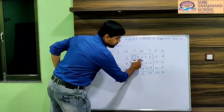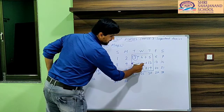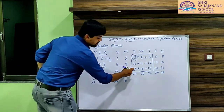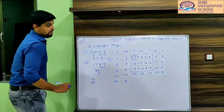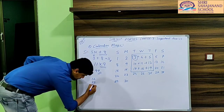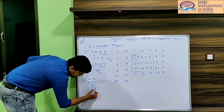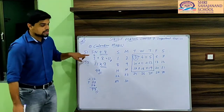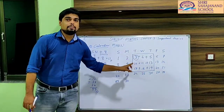Let's verify by adding: 3 plus 4 is 7, plus 5 is 12. First row: 12. Then 10 plus 11 is 21, plus 12 is 33. Second row: 33. Then 17 plus 18 plus 19 is 54. Now adding all rows: 12 plus 33 plus 54. The answer is 99. So this is the trick or simple magic with which you can calculate the sum of any 9 numbers in a given calendar.